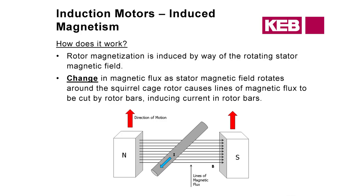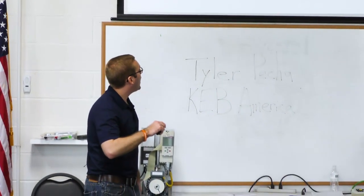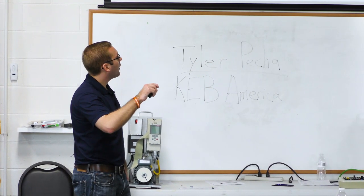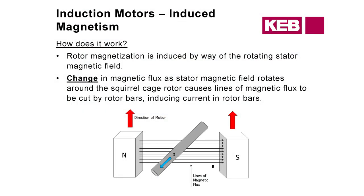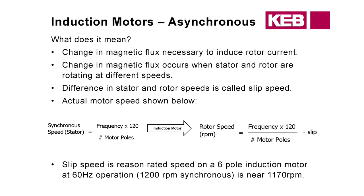This is where synchronous versus slip speed comes in. This is why an induction motor does not turn at 1200 rpm — it actually turns at say 1165 or 1170. That's because the stator field has to rotate slightly faster than the actual rotor itself, because we need that change in magnetic flux. If it was rotating at the same speed, we wouldn't have that change, so there would be no torque generation. Typically we recommend around 3% slip if it's not listed on the motor nameplate. For a 1200 rpm motor, 1170 or 1165 works well.